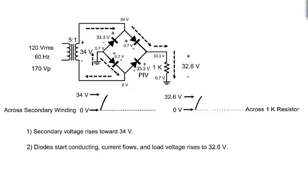The maximum load voltage in this case is 34 volts across the secondary winding, minus 0.7 volts across each of the two forward bias diodes. That's 34 volts minus 1.4 volts, or 32.6 volts.